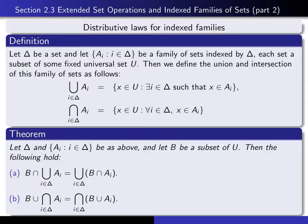Just to get you started: when you take an x in the left-hand side, it means it's in b and it's in the union. What does it mean to be in the union? It means there exists an index i in delta such that x is in a sub i. So now we have x in b and x in a sub i for some i in the indexing set, and therefore it must be in b intersected with that particular a sub i. In other words, there exists an index i such that x is in b intersected with a sub i, and therefore x is in the union on the right-hand side. That's the idea for showing this is a subset, and the reverse inclusion is proved similarly using nothing more than working definitions of intersection and union.